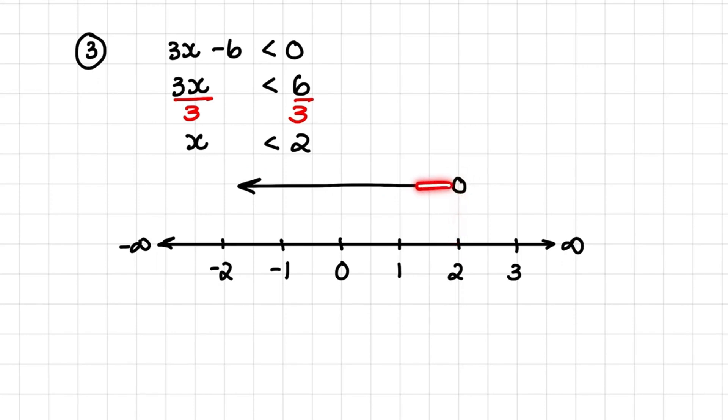x can be any value smaller than 2, but it cannot be equal to 2. And now my interval notation changes slightly. My minimum value would be negative infinity and my maximum value would be 2. But 2 is also shown of a curved bracket because it is not included.